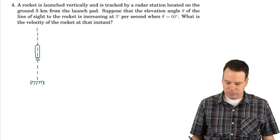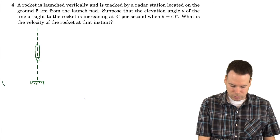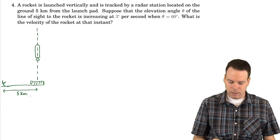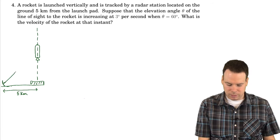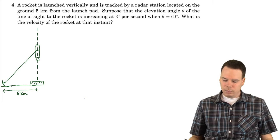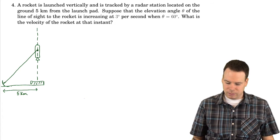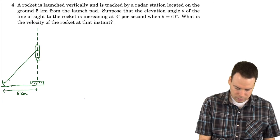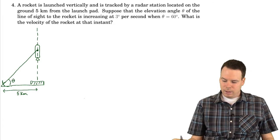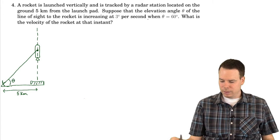Five kilometers from the launch pad is this radar station. Here's our radar station, five kilometers from the launch pad, so this is a distance of five kilometers. This radar station is tracking the rocket, so it's got it in its direct line of sight. We suppose that the angle of elevation of the line of sight is theta — that's angle theta in the diagram.